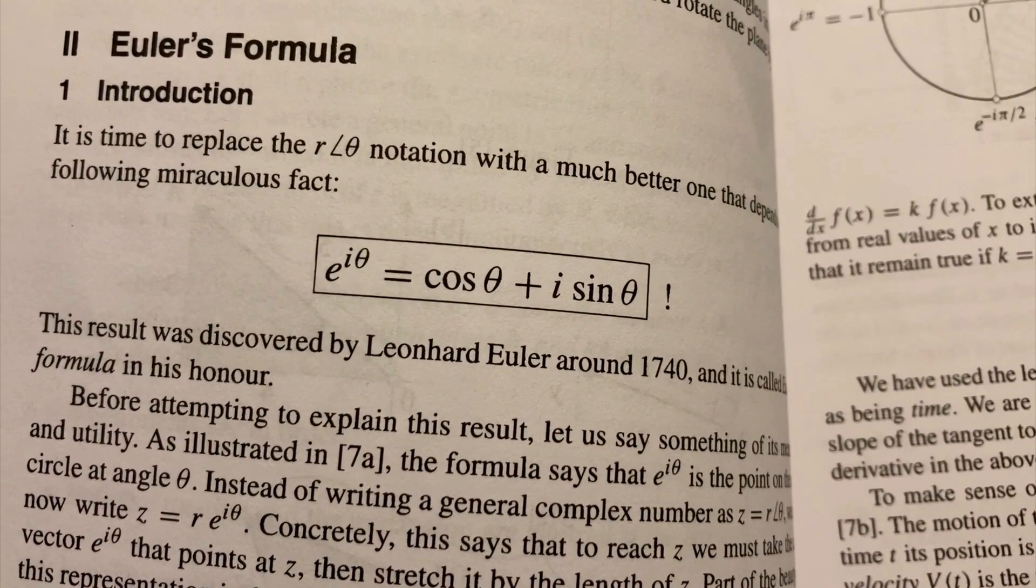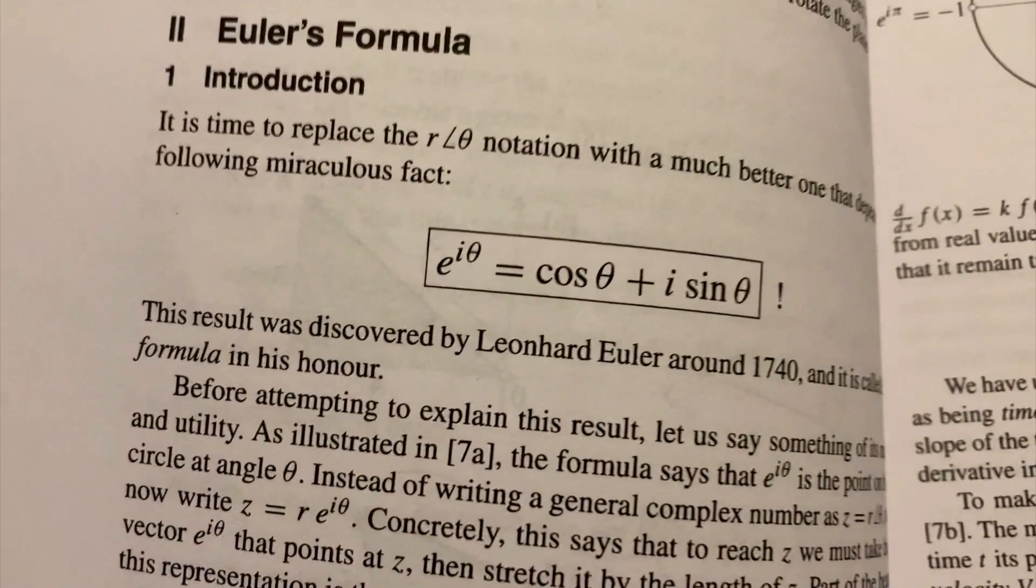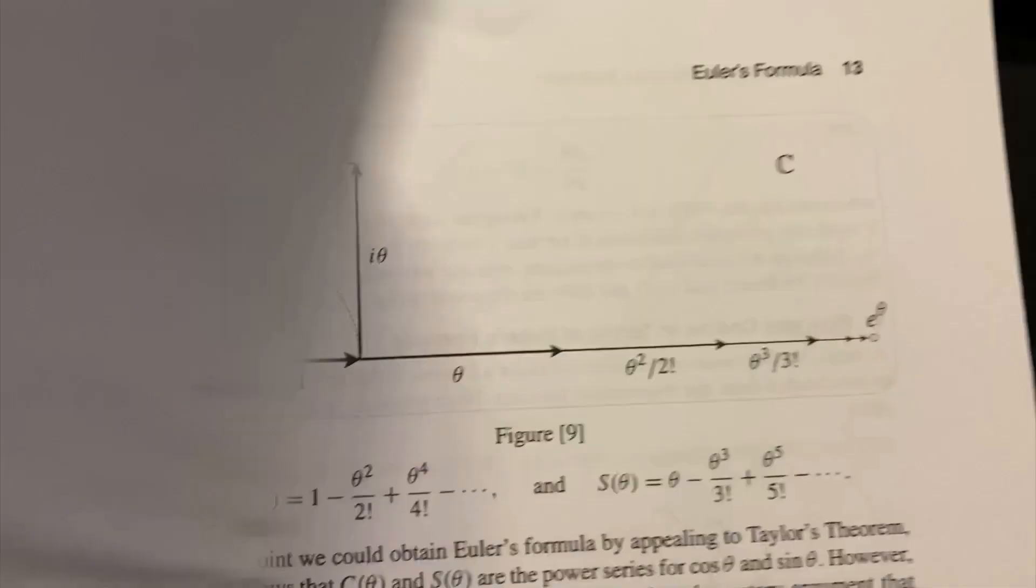The next important thing to do is to demonstrate the truth of Euler's formula: e to the i theta equals cos theta plus i sine theta. That's done in two ways. One is through an argument related to parametric curves, and another is through an argument related to power series. These are both very, very beautiful.